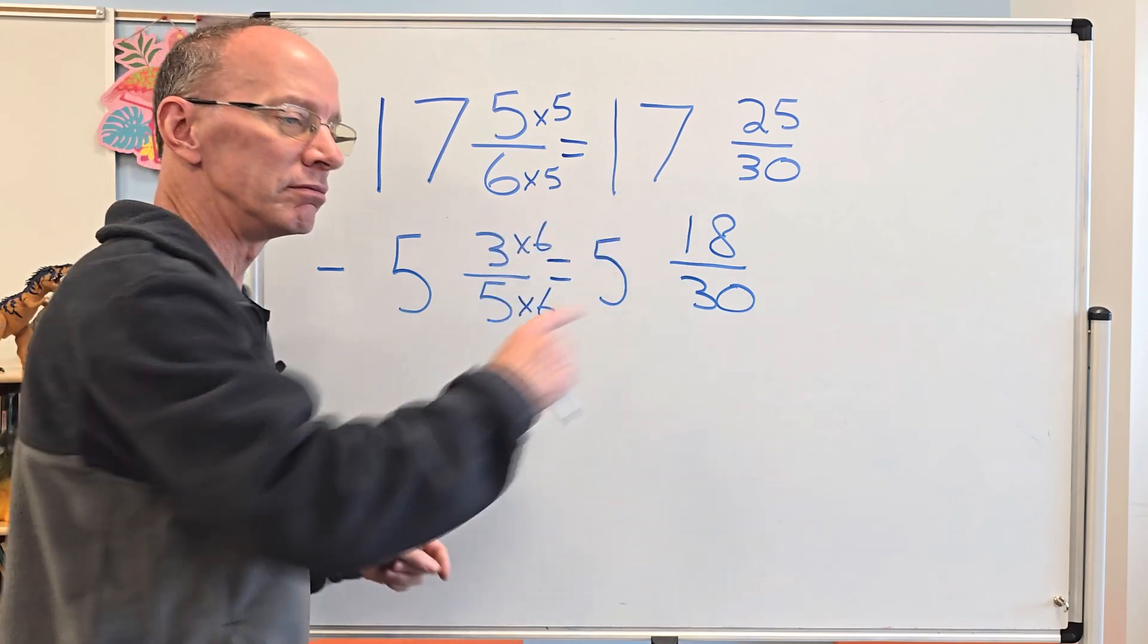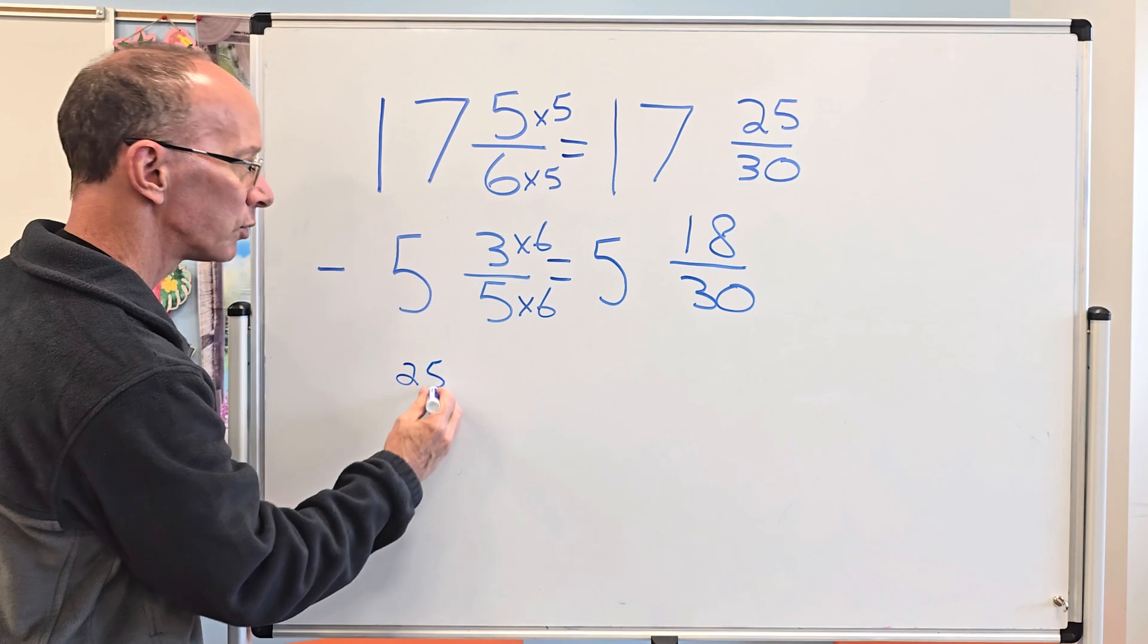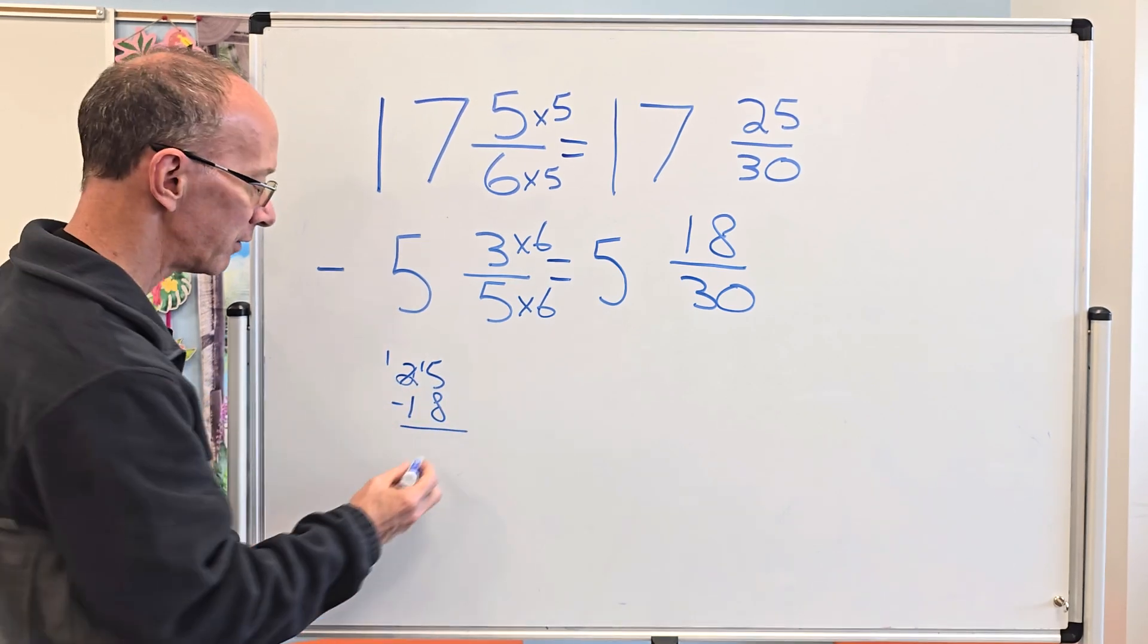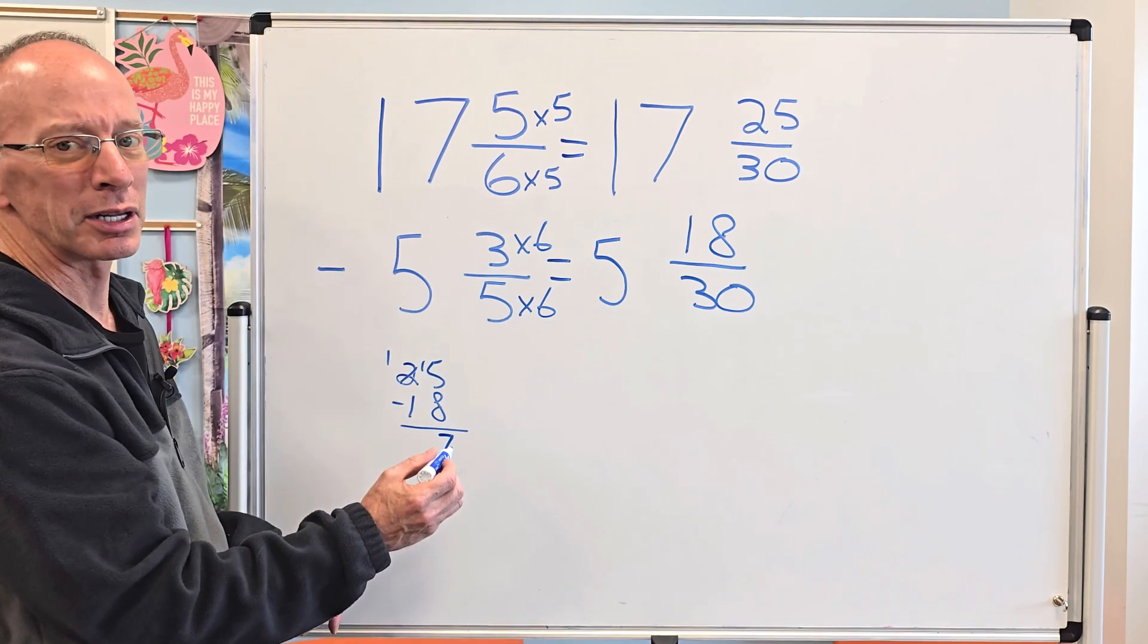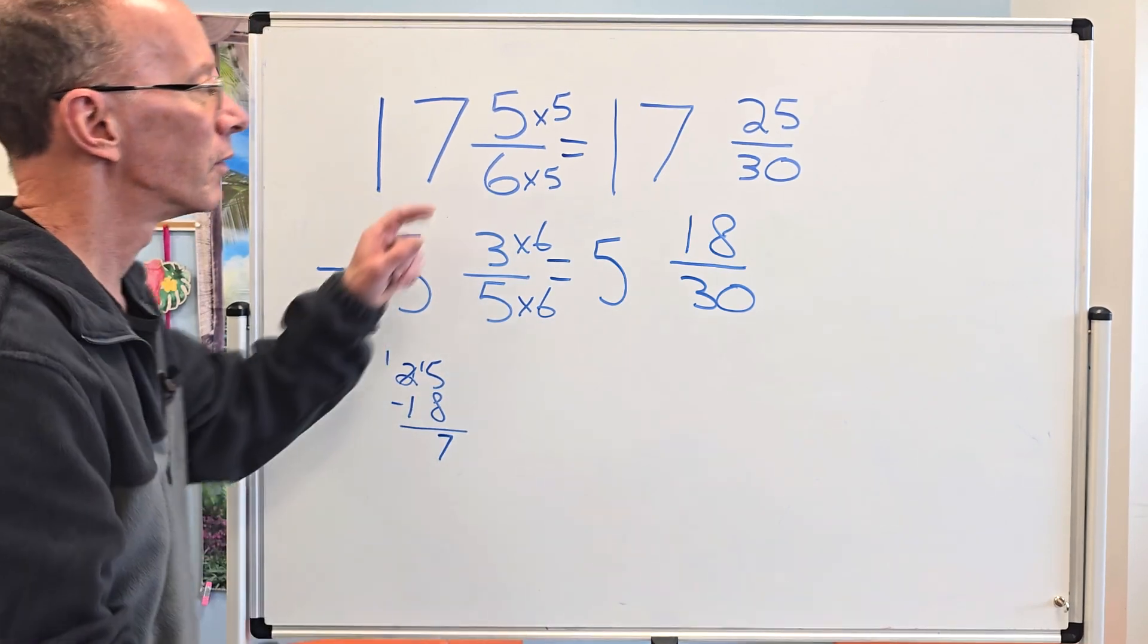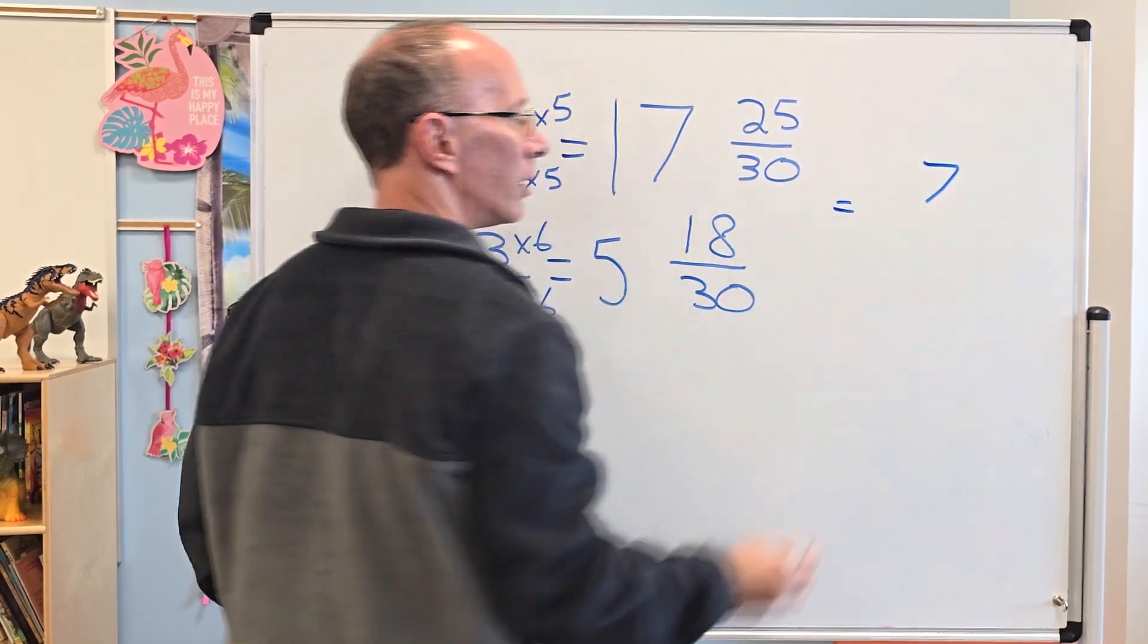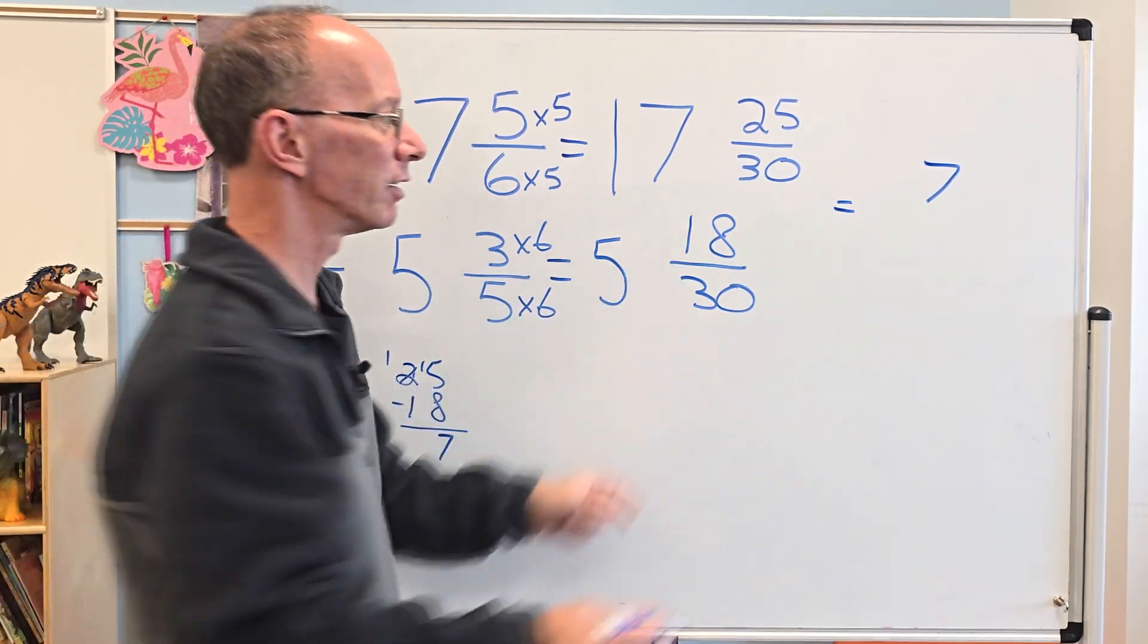If you're not super fast on subtraction, you could always do a little figuring. So 25 minus 18, I need to borrow. That would be 8 plus 7 is 15, and 1 minus 1 is 0. So we're going to put 7 right here because that is 25 minus 18 equals 7. Keep the denominator the same.